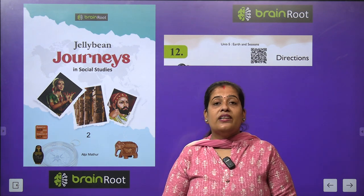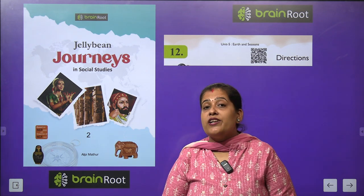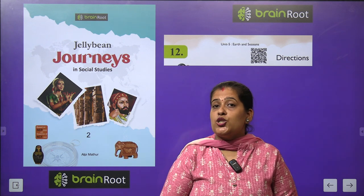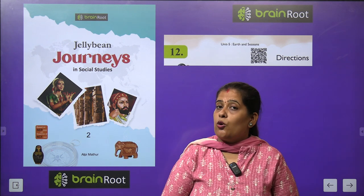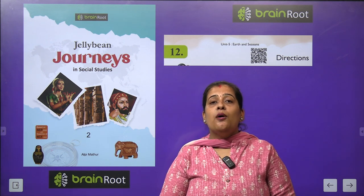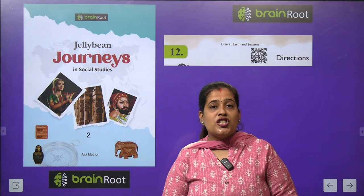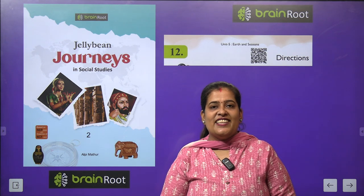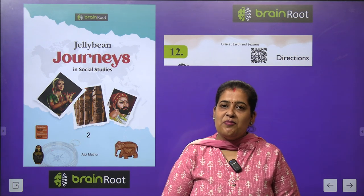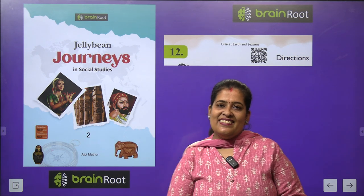As you know there are four directions: East, West, North, South. चार दिशाएं होती हैं: पूरब, पच्चिम, उत्तर, दक्षिण। चलिए इनके बारे में पढ़ते हैं।